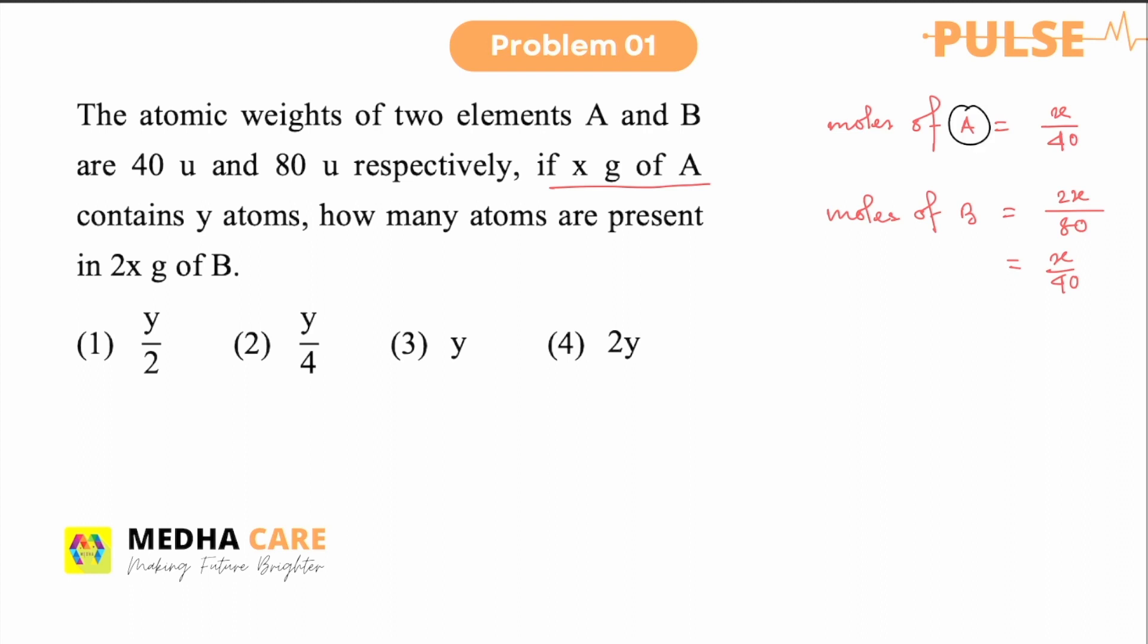So as A and B both contain same number of moles, they should also contain same number of atoms. If A contains y atoms, then B will also contain same number of atoms. So the answer will be 3, y.